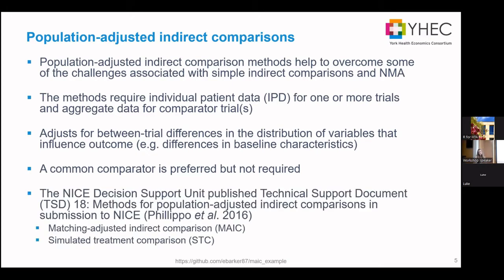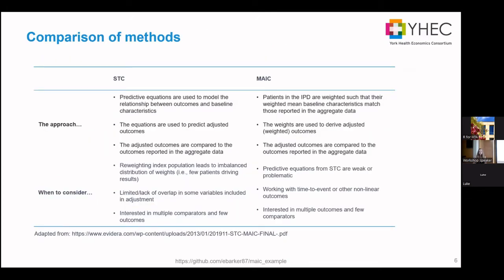In 2016, NICE published Technical Support Document 18, which looked at these methods — in particular matching adjusted indirect comparisons (MAIC) and simulated treatment comparisons (STC). Up until that point they were already being used in some submissions, but the document made it easier to understand how and why we might need them.